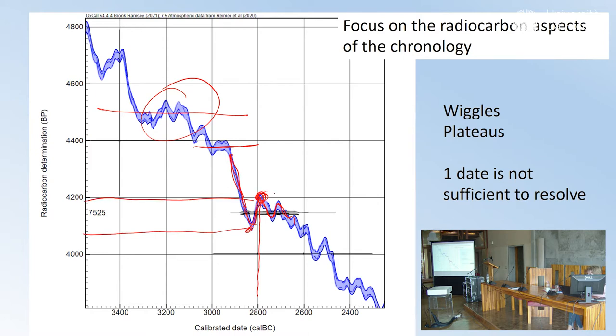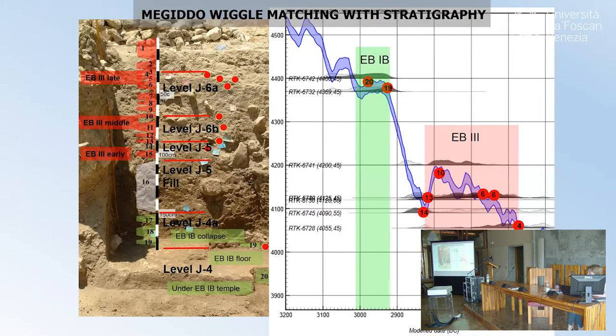These are things that have to be considered when you start to plan your chronology because the density of your layers is super important when you have this wiggle matching. This is the classical example of Megiddo that we have published. We have dates like this one which was older than all the rest, but in the stratigraphy it was higher and so it had to be younger. Because we had many dates, one after the other, we could cut and follow this wiggle matching with our sediments. This is something that enhances a lot of your precision and accuracy in the chronology.